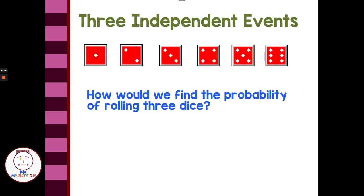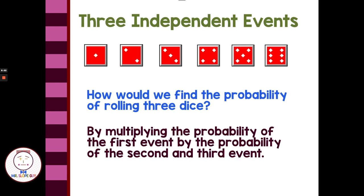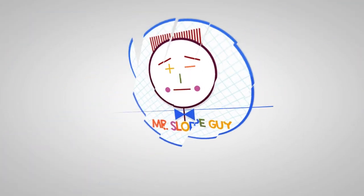What about three independent events? We find the probability of the first event, multiply it by the probability of the second event, then multiply by the probability of the third event — the same way as with two events, just multiplying by a third probability. You can do the same with four or five things — keep adding on. If each event doesn't rely on the previous one and it's independent, with the same probability each time, you can just keep multiplying by the additional events. I hope that helps you get started with probability. Have a great day!